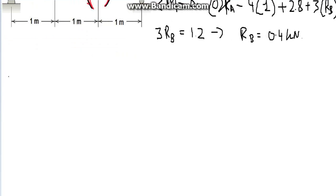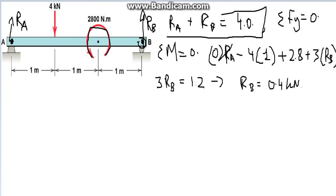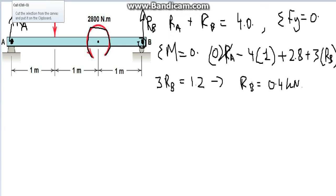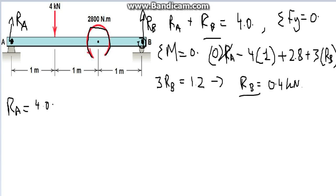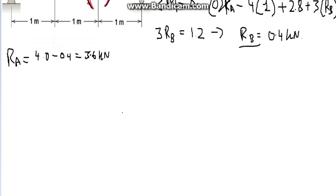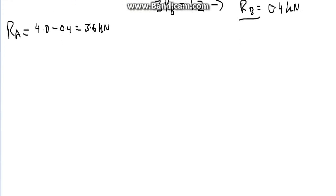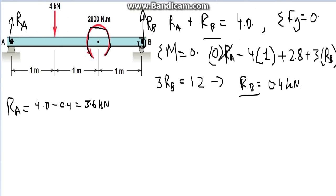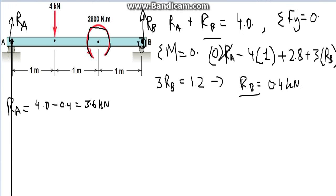Alright, now back to the equation we derived here. Substitute the RB value in and you will easily be able to work out RA. RA equals 4.0 subtract 0.4, which equals 3.6 kilonewtons. We found the reaction forces — that's high school math. Now to move on to the actual mechanical design part. This is the confusing part for many people: how to actually draw these shear and bending moment diagrams.